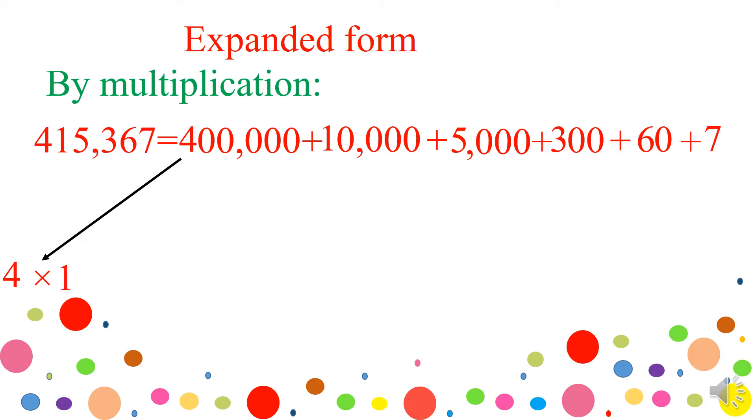Then, I take all the zeros and I put them beside the one. So, four hundred thousand equals four times one hundred thousand.